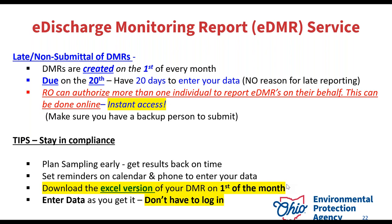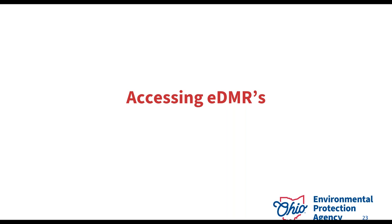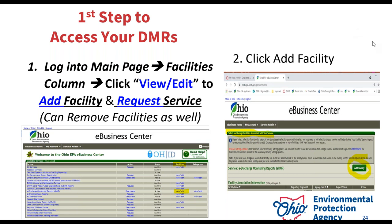Accessing EDMRs: if you're a delegate submitter and you don't know who the RO is, you're going to request the service yourself. When you log in and go to the main eBusiness Center homepage, you will click 'view/edit' for the EDMR row. Once you do that, it takes you to the next page where you'll see the 'add facility' button. If you do not see this button, that's a good indicator that you don't have your PIN activated for your account.